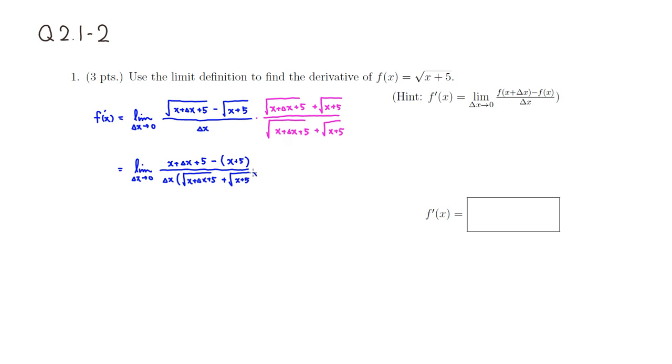Then we can cancel: here's an x minus x, and 5 minus 5. And also, we can cancel Δx on the bottom with Δx on top, so you get 1 on top. Then as Δx goes to 0, we know that this approaches 0 and goes away, so this is equal to